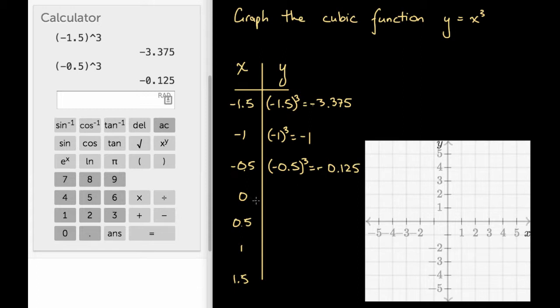Next up, we've got x equals 0. At x equals 0, we're going to have y equals 0 cubed. That's going to be 0 times 0 times 0. 0 times 0 times 0 is 0. The answer here is 0.